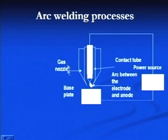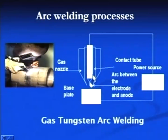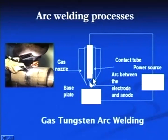The next joining process in arc welding is the TIG or tungsten inert gas welding process. In this process, the joint is produced by heat from an arc which is established between the non-consumable tungsten electrode and the work piece. The molten pool generated by the arc heat is allowed to solidify to produce a sound joint.